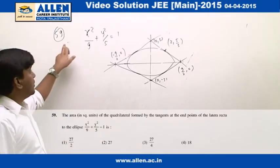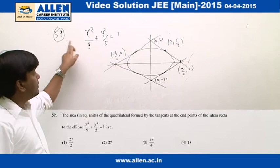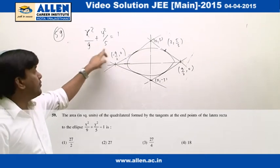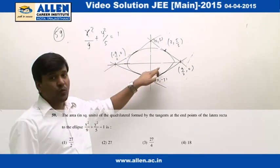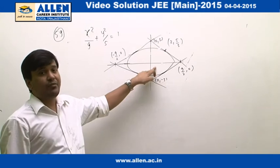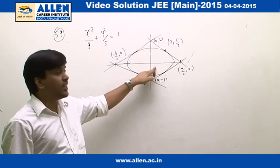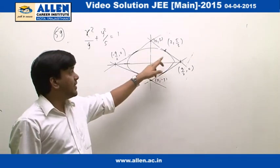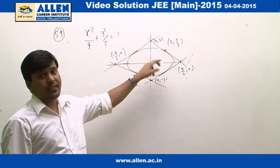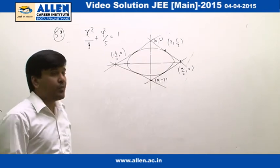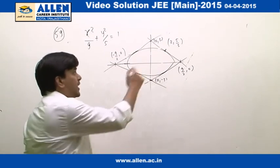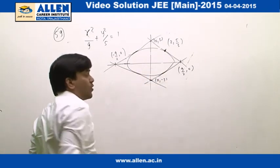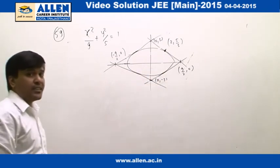In question number 59, we have been given an ellipse x²/9 + y²/5 = 1, and we have to find the area of the quadrilateral formed by the tangents at the latus rectum of this ellipse. First, we calculate the coordinates of the latus rectum.